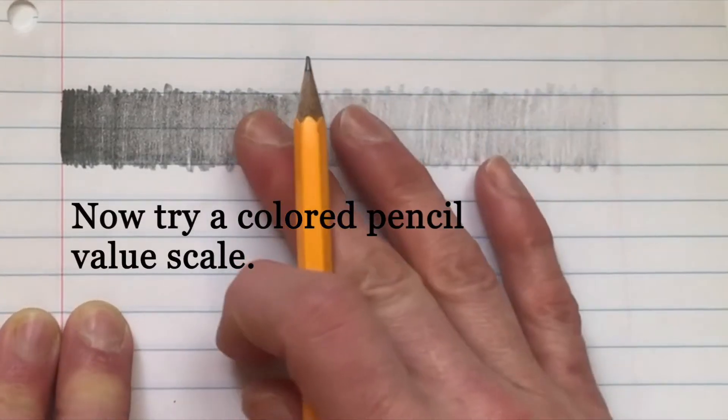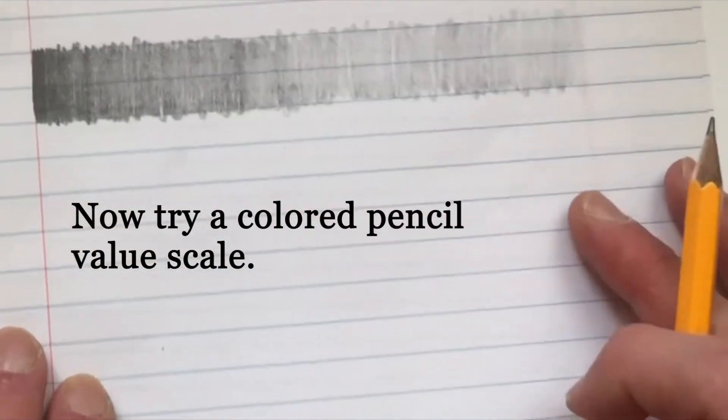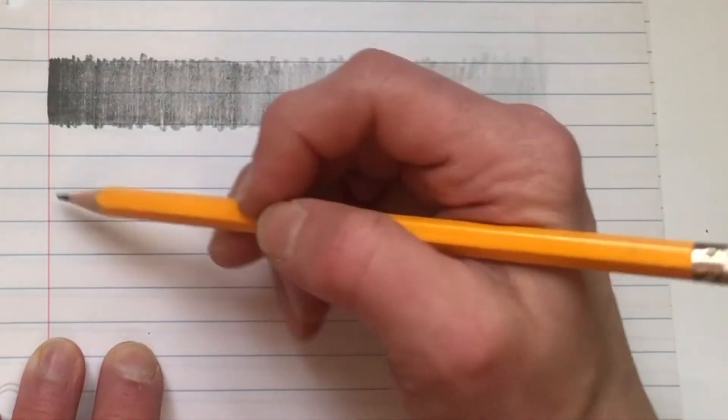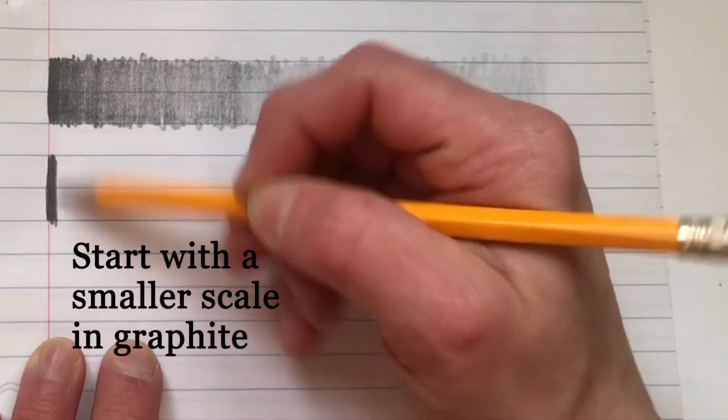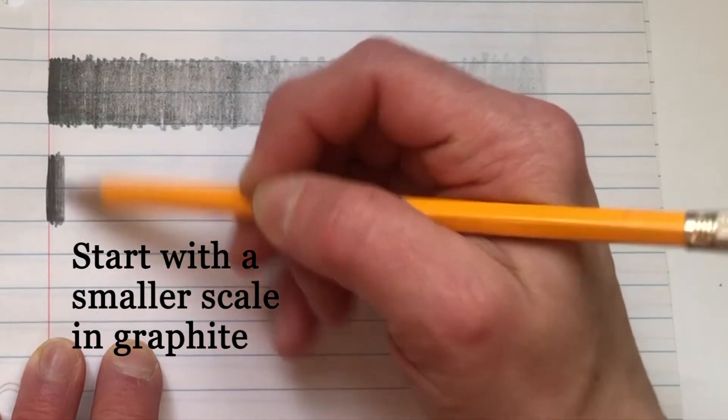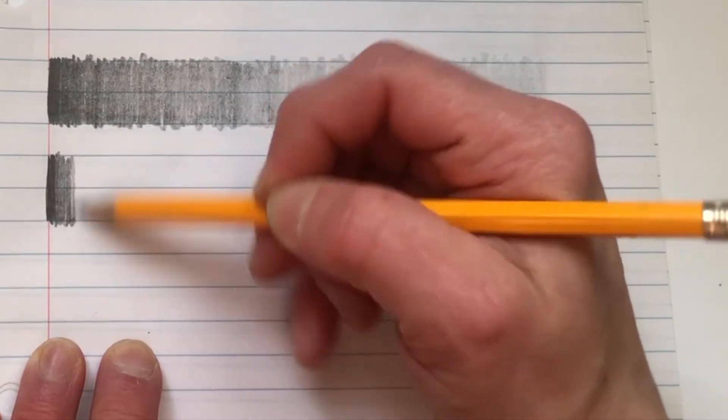Next one, we're going to go for the colored pencil. And remember, starting with pencil value first. Darker. Make a smaller value scale here. Make a lighter value just with the graphite.